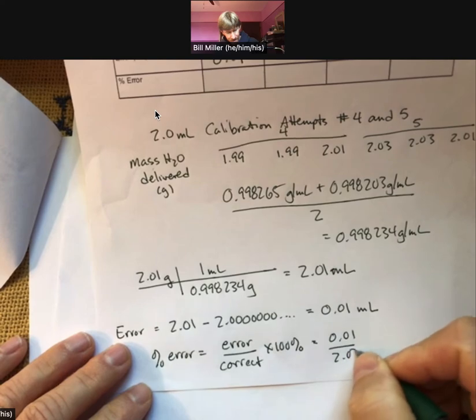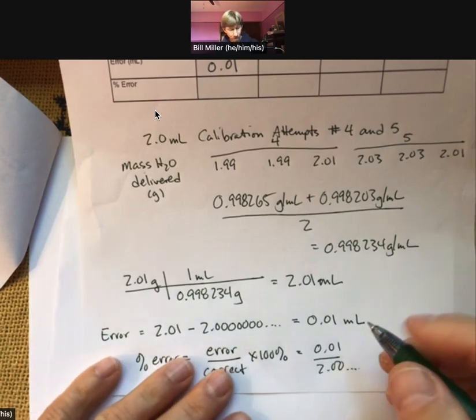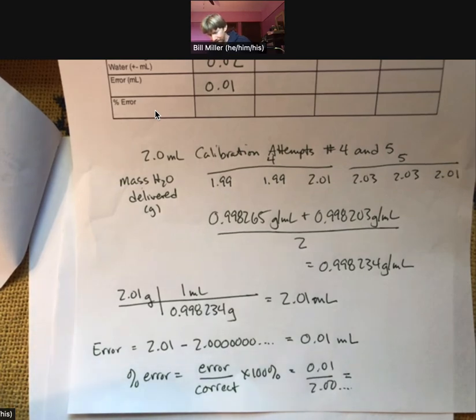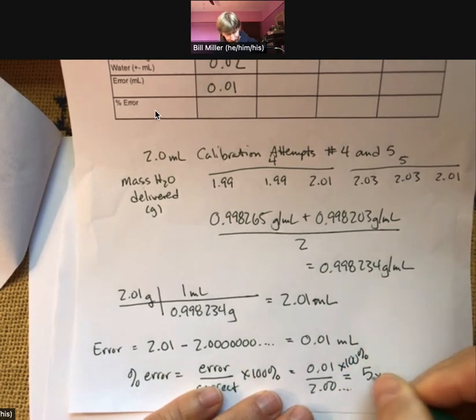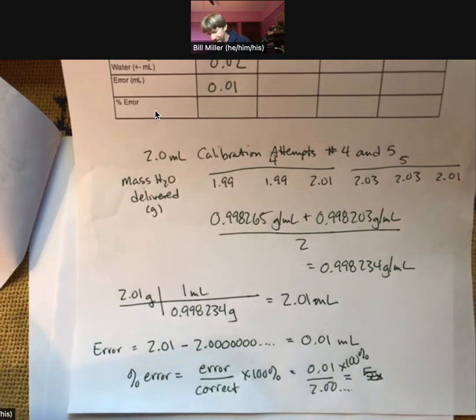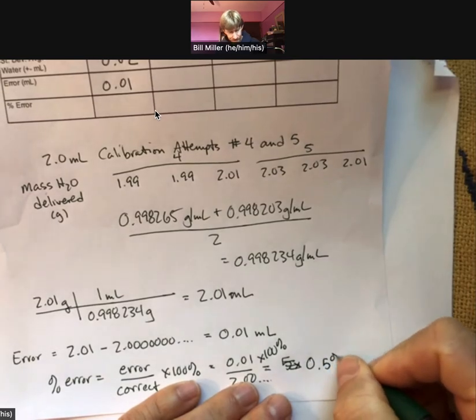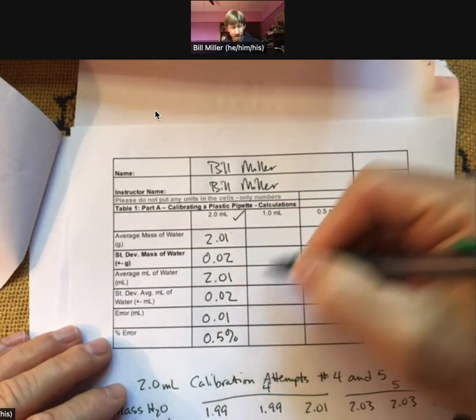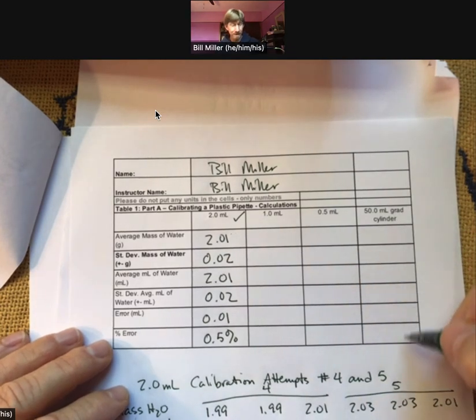So that's going to be 0.01 over 2.00 dot dot dot. Since we're dividing here, we're only going to have one sig fig in our answer. 0.01 divided by 2, oh, times 100. Common mistake to forget that times 100, as I just demonstrated. 0.5%. That is one sig fig. And that is how you're going to do the two milliliter. You're going to do the same thing for your one and 0.5 milliliter, and your graduated cylinder, by the way.